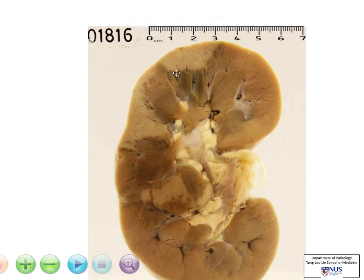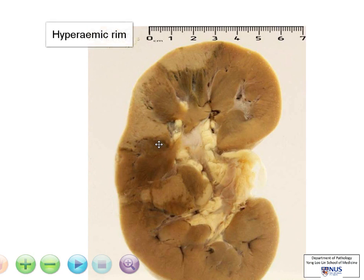Now at the edges of these pale areas, we can see some darker areas, almost like a darker rim around them, and these represent areas of hyperemia, or increased blood flow.